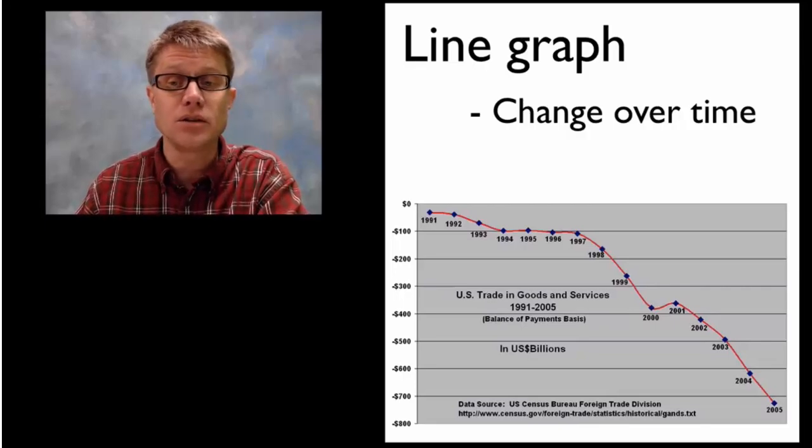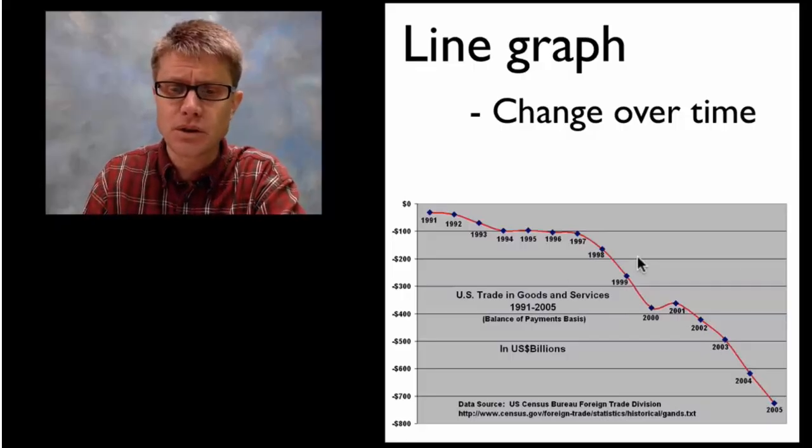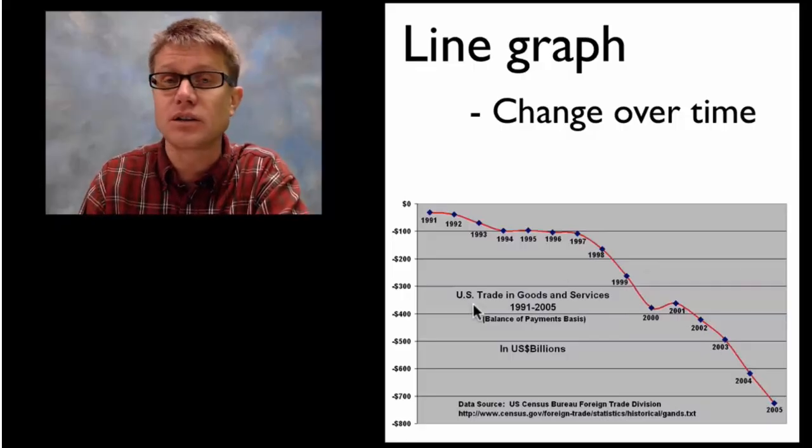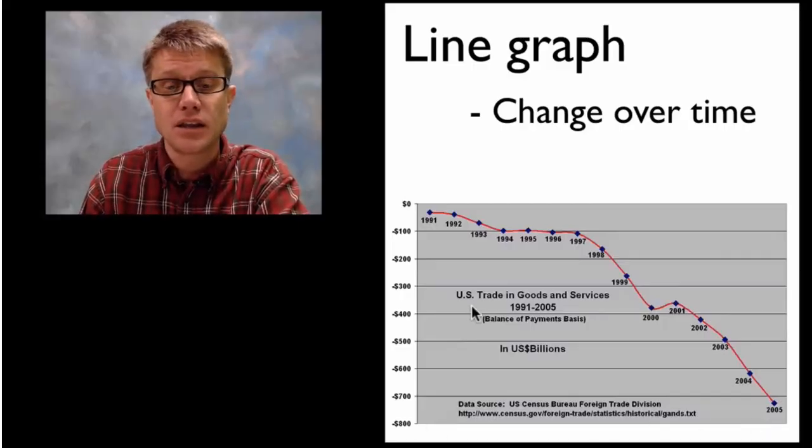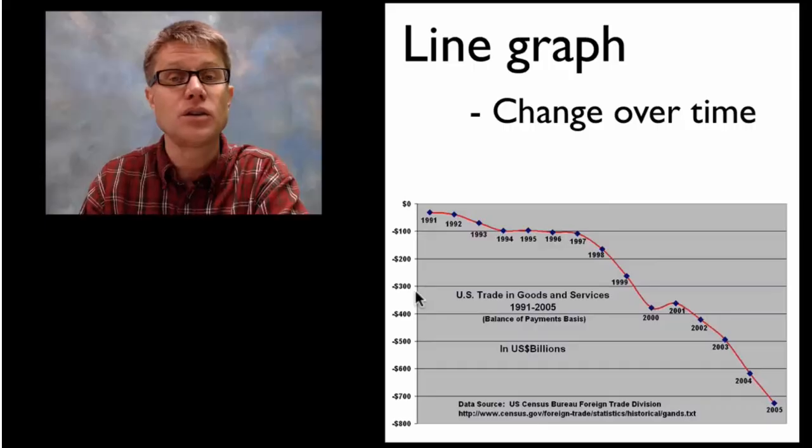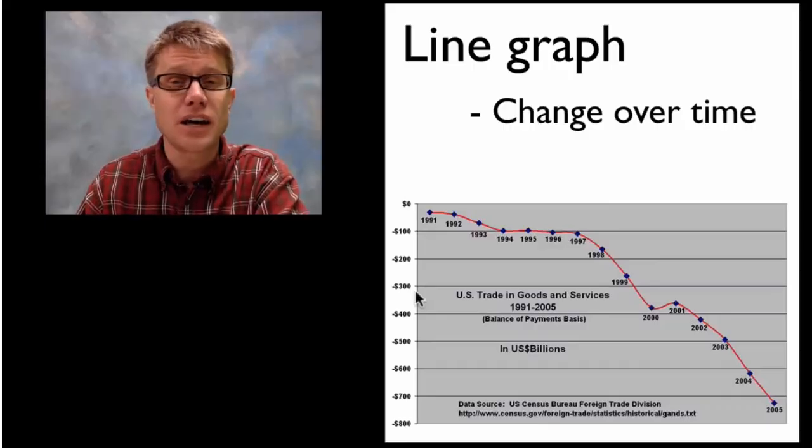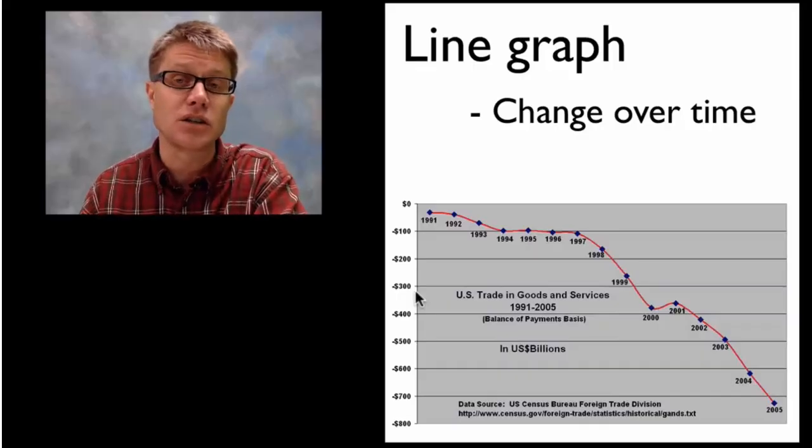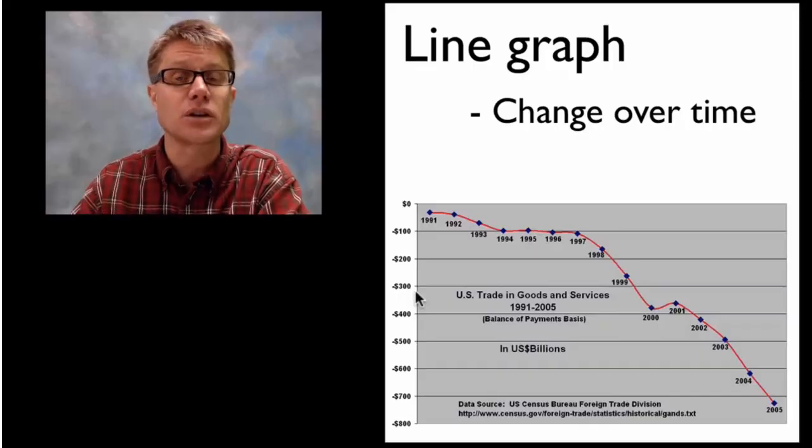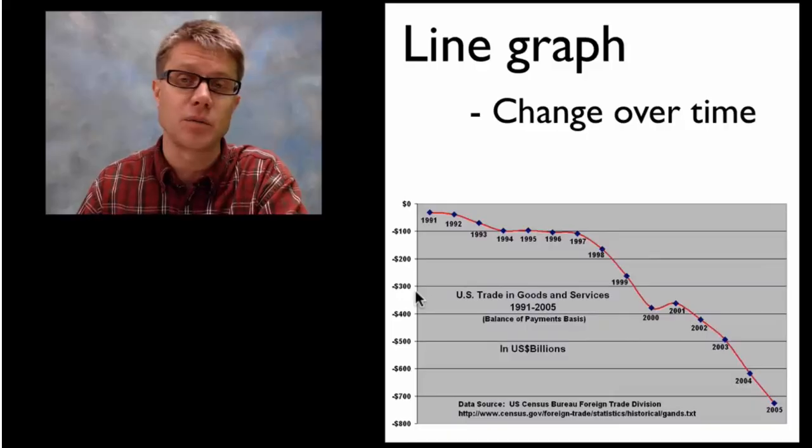First one is going to be a line graph. We're going to use a line graph if we're looking at change over time. In this one we're looking at US trade in goods and services. You can see that the dates are going to be along the x axis and then the monies are going to be along the y axis. In science maybe we're collecting data on an individual worm and how much oxygen it consumes over time then the line graph would be a great example.